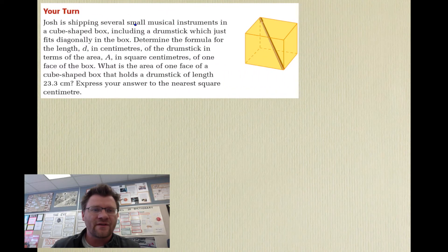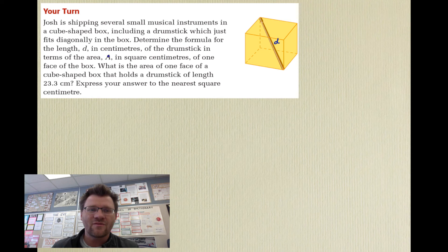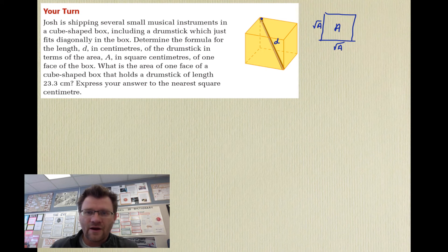Our final example: Josh is shipping musical instruments in a cube-shaped box, including a drumstick which just fits diagonally in the box. Determine the formula for the length d in centimeters of the drumstick in terms of the area A in square centimeters of one face of the box. We call the area of any one face capital A, which means each side is root A, since the faces are squares.